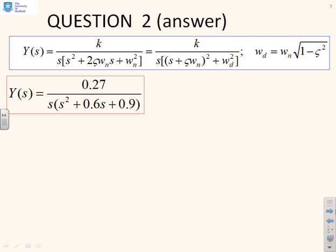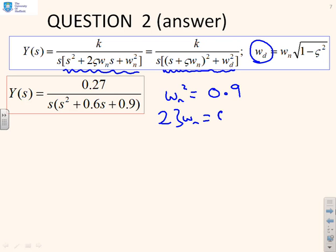So, first one then. Now, we've reminded you of what this normal form is here, and we've also reminded you that you can write this in this form here, where ω_d is the damped natural frequency. So, we're interested in ζ, ω_n and ω_d. So, for this first one, by inspection, ω_n squared equals 0.9, and 2ζω_n equals 0.6, which tells you that ζ equals 0.3 over the root of 0.9. I'm not going to bother putting that in my calculator. And now,